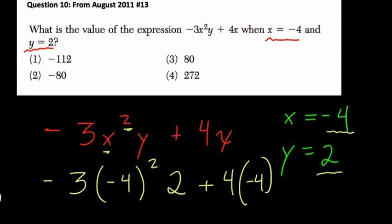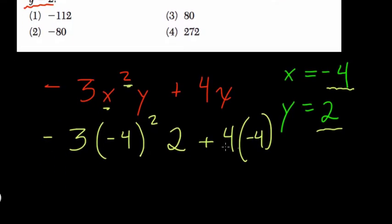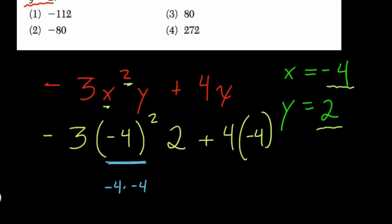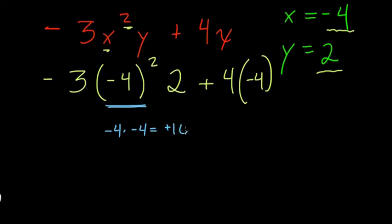So now we're just going to work out the arithmetic here. Negative 4 squared, what's that? Well, that's negative 4 times negative 4. Well, what's that? Well, that's positive 16, right?